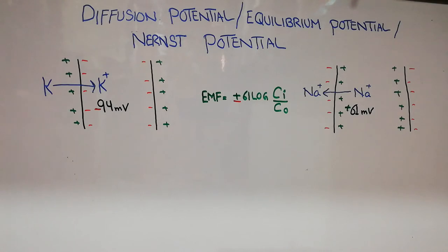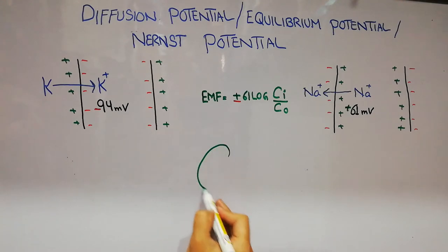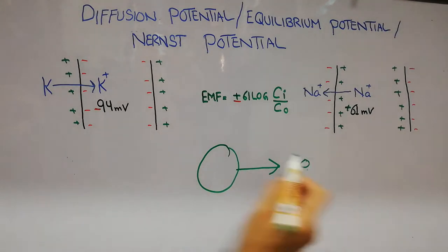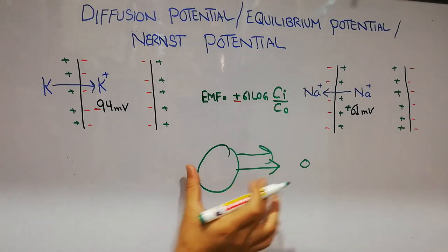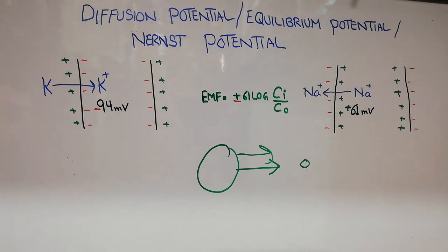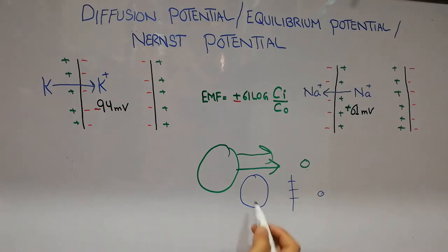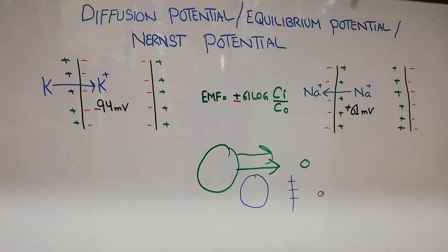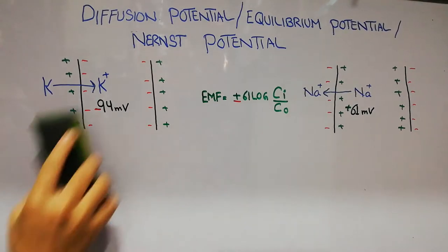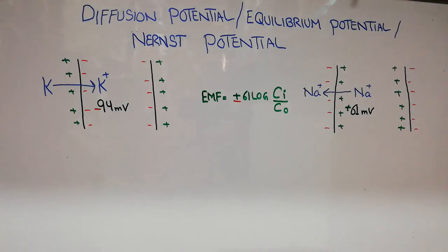We also discussed osmosis, which is basically the movement of water molecules across a semi-permeable membrane. Diffusion and osmosis are essentially the same — both involve the movement of ions or water molecules from a region of high concentration towards a region of low concentration. Using this same concept, we will now discuss diffusion potential, equilibrium potential, and Nernst potential.